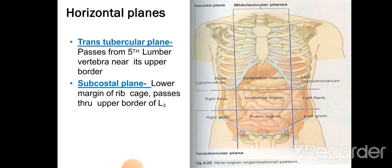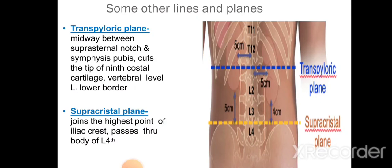These four lines divide the abdominal cavity into nine areas: the right hypochondrium, left hypochondrium, epigastric region, right and left flanks (lumbar areas), the umbilical region in between, the pubic region below, and the right and left groins on both sides of the pubis.